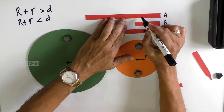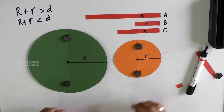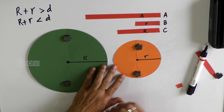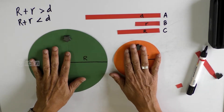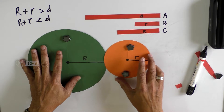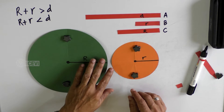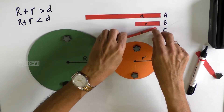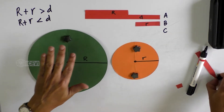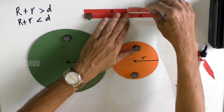Strip C is the radius of the big circle (capital R), strip B is the radius of the small circle (small r), and strip A is the distance D. Now these two circles are non-intersecting because they are separate — they are not touching or overlapping each other.